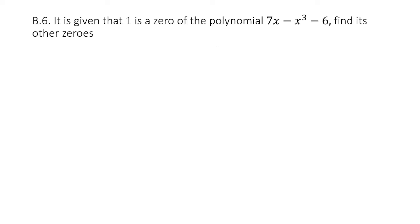The question given is: it is given that 1 is a zero of the polynomial 7x minus x to the power 3 minus 6. Find its other zeros. So you look at this cubic equation — what is the variable with the highest power? The highest power here is 3. The degree of this polynomial is 3.